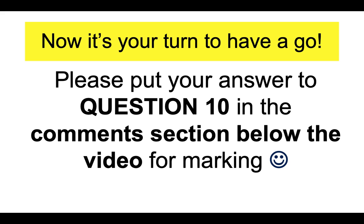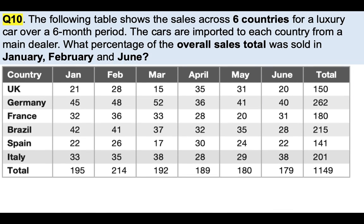So now it's your turn to have a go. Please put your answer to question 10 in the comments section below the video for marking. The following table shows the sales across six countries for a luxury car over a six-month period. The cars are imported to each country from a main dealer. What percentage of the overall sales total was sold in January, February and June? I've not got a timer on this page because of the size of the chart, but I will count to 30 and tell you when the time is up. Okay, brilliant, well done.